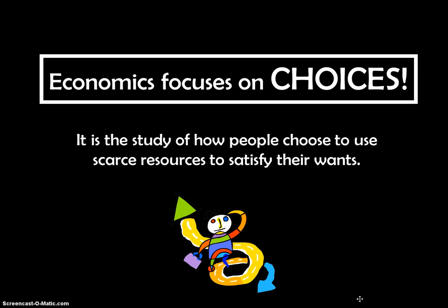In economics, decisions don't have to be all or nothing — the best decisions are often a little bit of this and a little bit of that. We decide whether the marginal costs are greater or less than the additional benefits of producing one more unit or hiring one more unit of labor. In conclusion, economics focuses on choices — it's the study of how people choose to use scarce resources to satisfy their wants, and every society does this differently. It all boils down to scarcity of resources versus non-satiation.